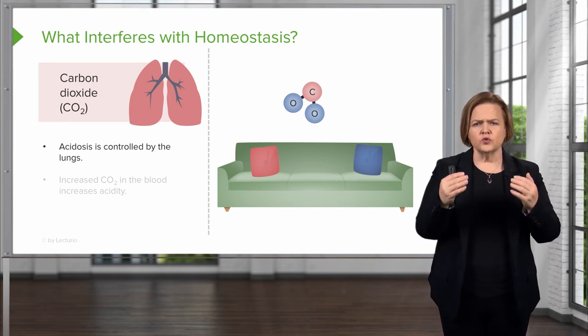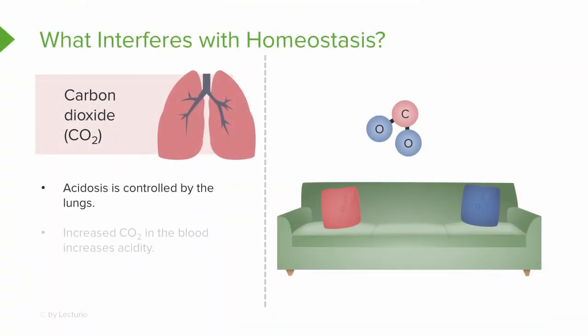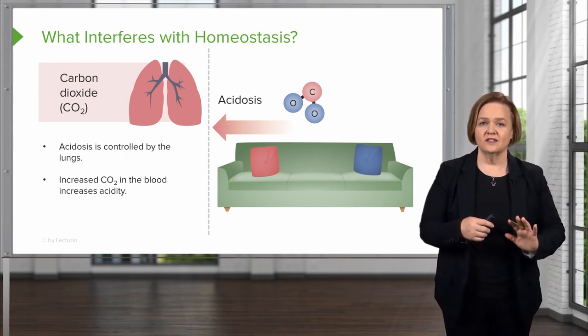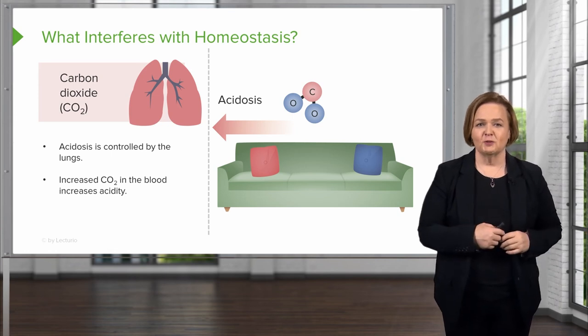Looking at the couch, if we have excess bicarb, our pH will be shoved past 7.45 — the more bicarb, the more basic or alkalotic you become. You can tell that by the changes in the pH. The lungs can kick in and make a difference a lot quicker, but carbon dioxide controlled by the lungs means more CO2 in the blood makes you more acidotic. So we've looked at normal pH, normal CO2, normal bicarb, and the effects of excess bicarb versus excess CO2 on pH direction.